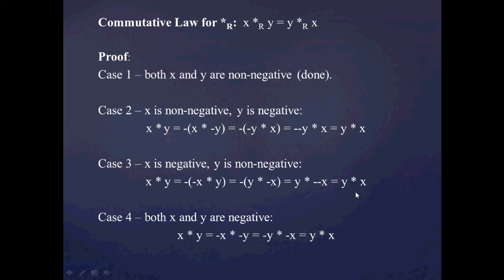Finally, case four: both x and y are negative. Starting with x times y, I use the definition for multiplying two negative numbers — take the product of absolute values. Since x and y are negative, their absolute values are their negations, so x times y equals negative x times negative y. Since x and y are negative, their negations are positive, and I know negative x commutes with negative y, so that equals negative y times negative x. And notice this is indeed equal to y times x, because starting with y times x and applying the definition for two negative factors gives negative y times negative x. So the commutative law holds in all four cases, and we've now earned the right to swap these around as we'd like.